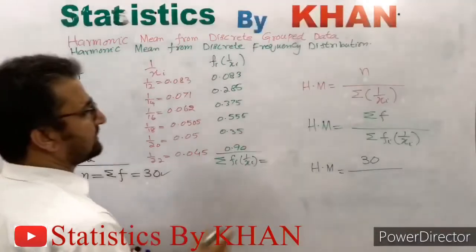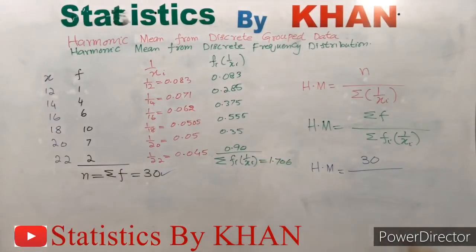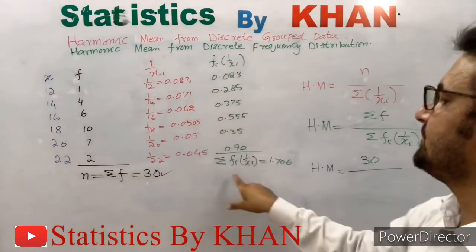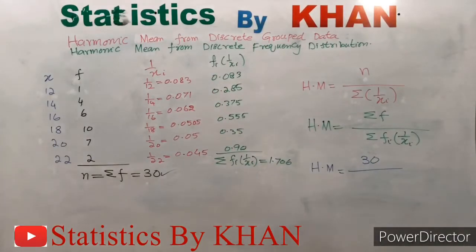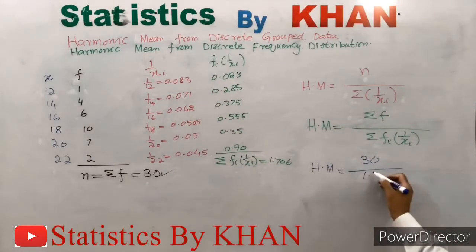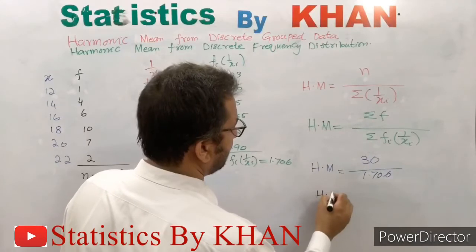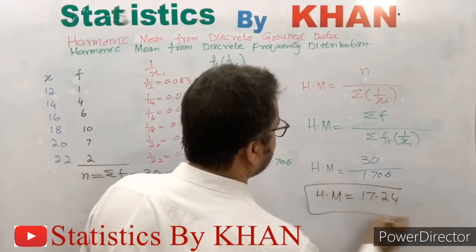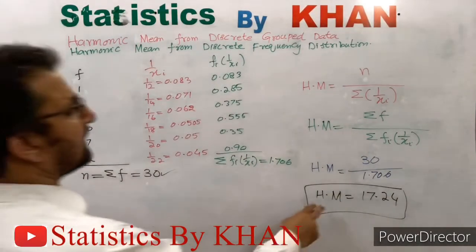When we add all values of the fi × 1/xi column, it gives us 1.706. Now in the formula, summation(fi × 1/xi) equals 1.706, so we place 1.706 in the denominator. Simplifying this gives us a harmonic mean equal to 17.24.